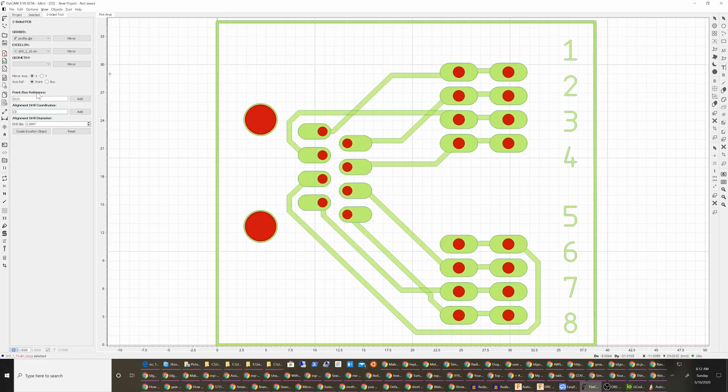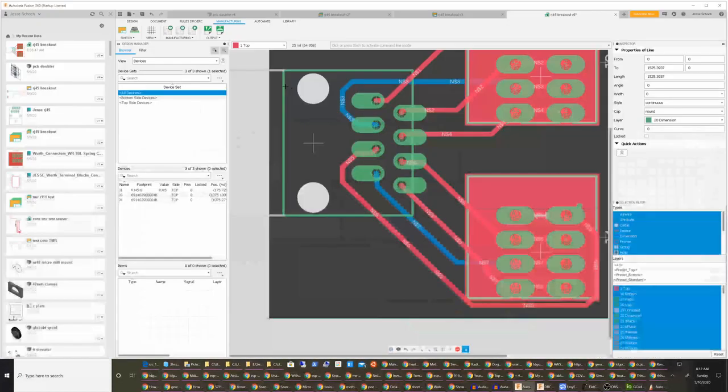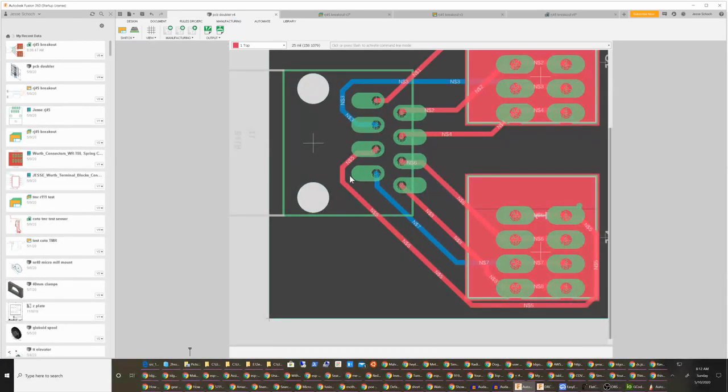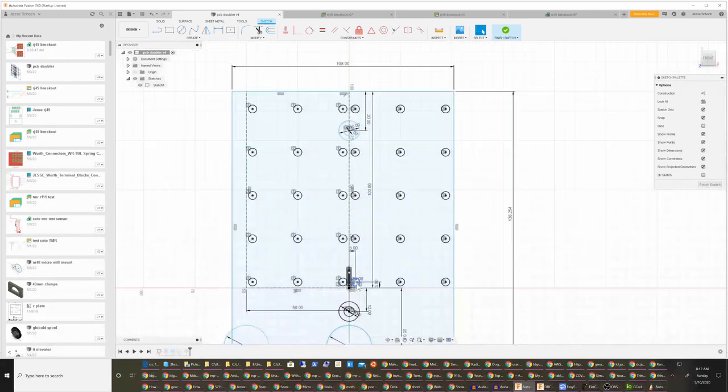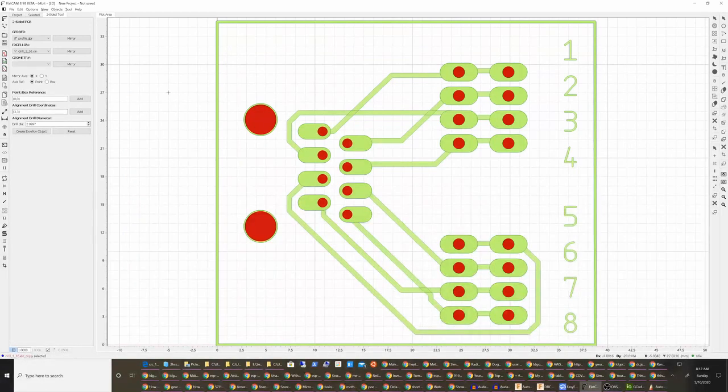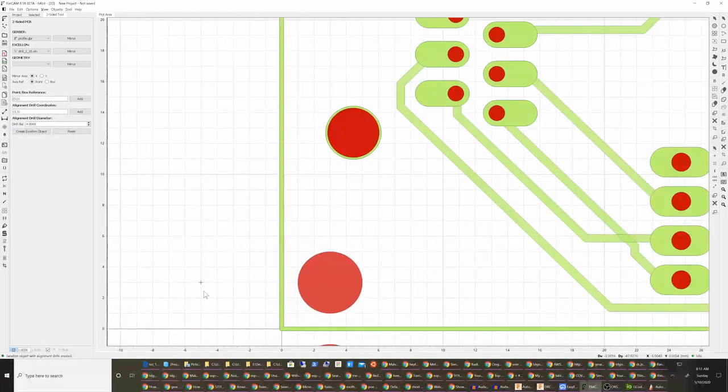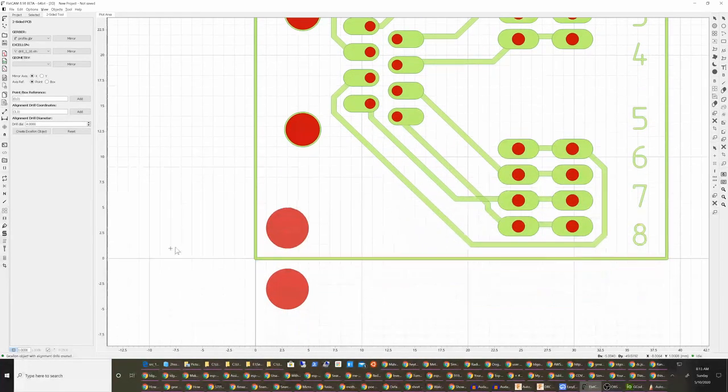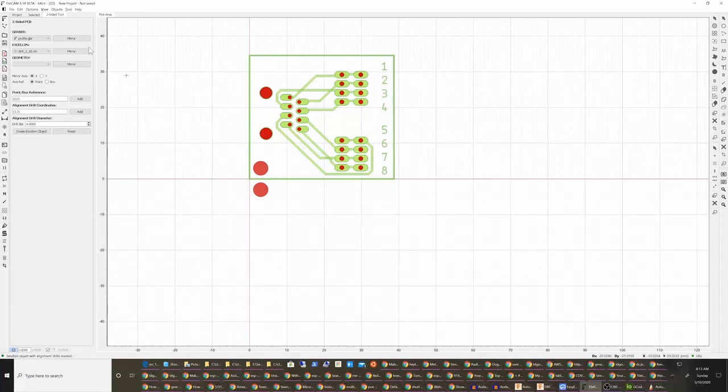My first hole is going to be 3-3. Let me just check that real quick. So this is 3-3, that's right and these are spaced 22 millimeters apart. So I want to have my first hole be 3-3 and my hole diameter should be 4. Then you create your Excellon object and just make sure that looks correct.